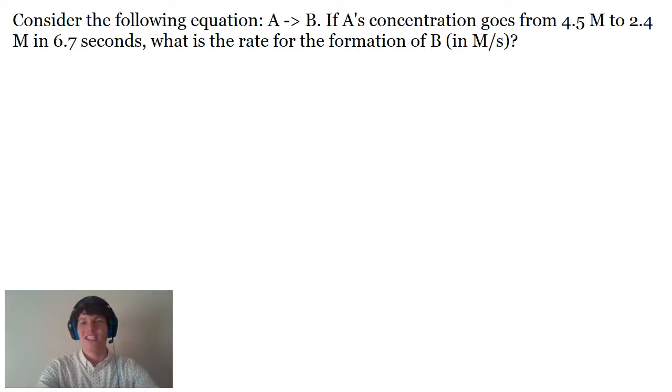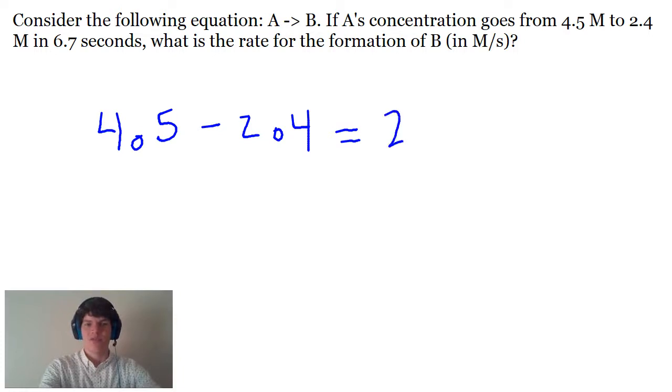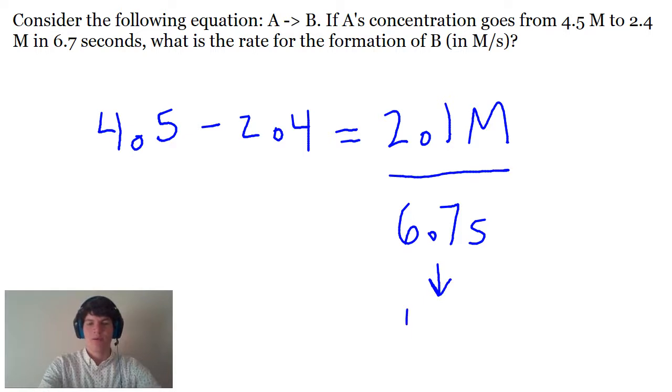Now if A's concentration is going from 4.5 to 2.4 and all of A is becoming B, that means 4.5 minus 2.4 will give us the molarity of B that is formed, which would be 2.1. Now I can just take this molarity of 2.1, divide it by 6.7 seconds, and I'm going to get about one third, or I could write that as 0.33.